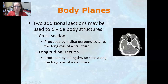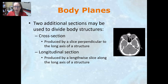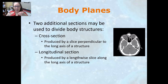The transverse plane goes across the body horizontally and divides it into top and bottom, or superior and inferior halves. There are also two additional sections: a cross-section is produced by a slice perpendicular to the long axis of a structure — think of slicing a cucumber — and this is what we see in CT scan imaging. A longitudinal section is produced by a lengthwise slice along the long axis, like slicing a hot dog bun lengthwise.